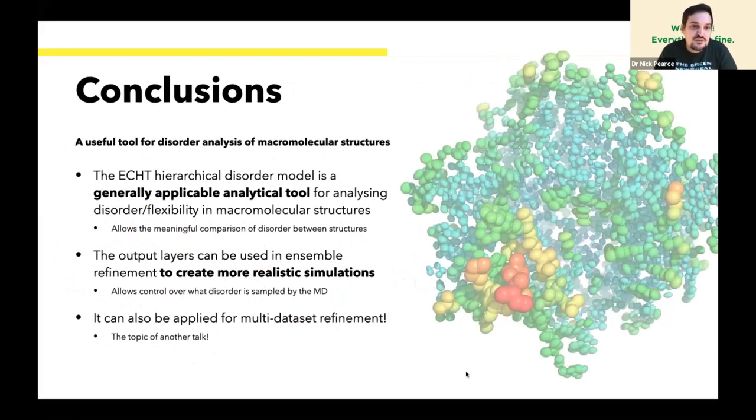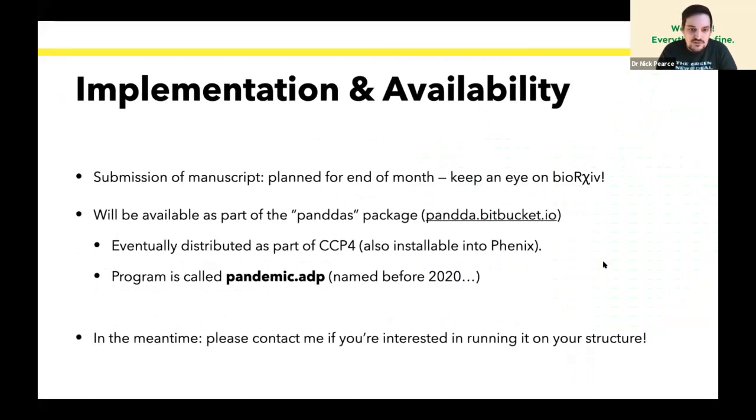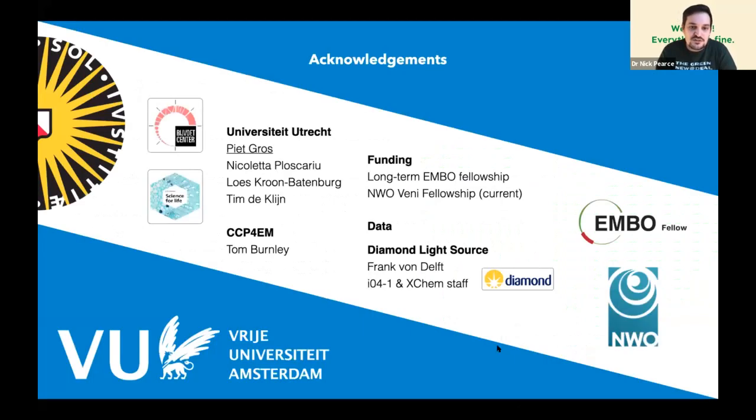So in conclusion, I presented what I hope is going to be a useful tool for disorder analysis in macromolecular structures. It's generally applicable, the model is completely flexible and extensible. Because it breaks everything down into interpretable components, it should enable comparison between arbitrary structures now, and hopefully to applications such as ensemble refinement to create more realistic simulations. I haven't had time to talk about it, but there's also applications to multi-dataset refinement. Just to thank my supervisor Peter Cross and to funding from the EMBO fellowship and my current Vaney fellowship. Thank you very much.